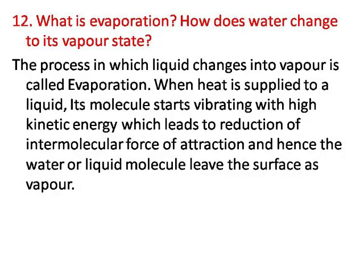Number twelve: what is evaporation? How does water change to its vapor state? The process by which a liquid changes into vapor is called evaporation. When we supply heat to a liquid, its molecules start vibrating with higher kinetic energy, which weakens the intermolecular force of attraction. When the intermolecular force of attraction is reduced, the molecules of the liquid leave the surface as vapor.